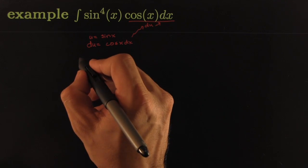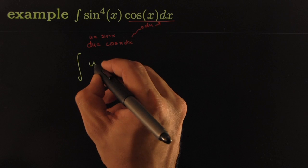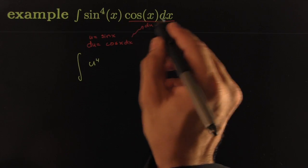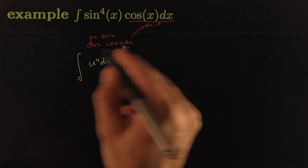And so it's already set up to become the following form. u to the 4th. That's my sine to the 4th. And here I have the differential of u. Just by making the substitutions from the dictionary here.